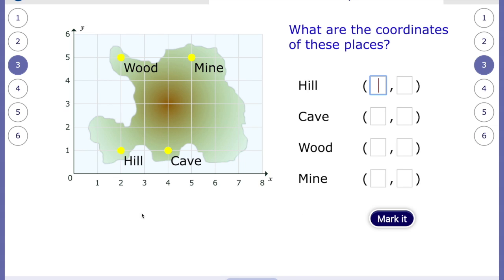Let's have a look. Let's go to the hill. Okay, is it one, two, or two, one? Hopefully you said it's two, one. We read the x-axis first. And that means the cave is going to be four, one.